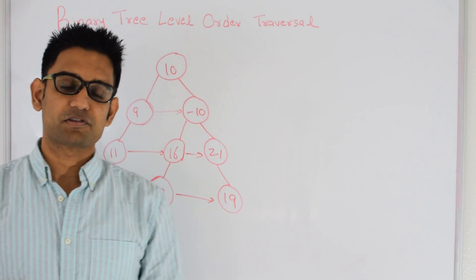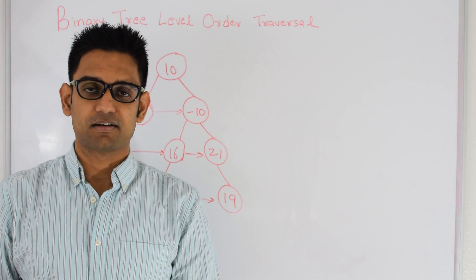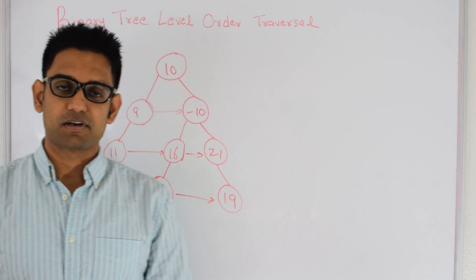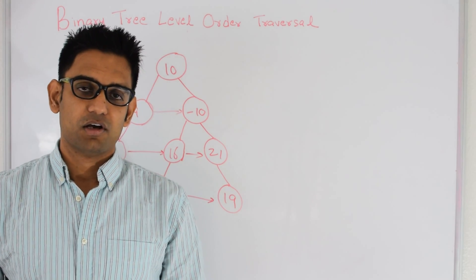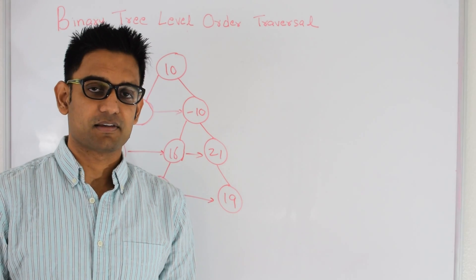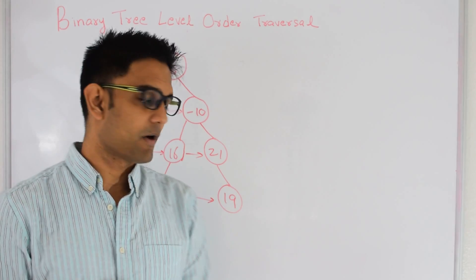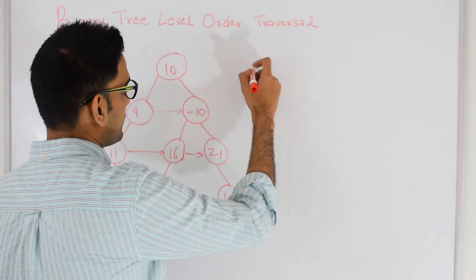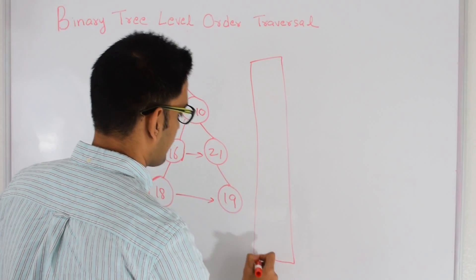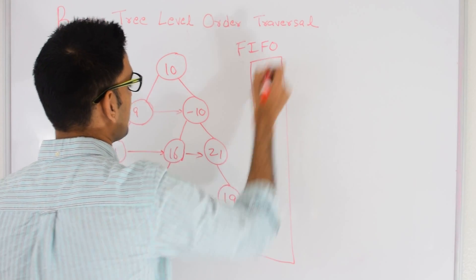For depth first traversal we use recursion, which kind of simulates a stack to solve the problem. Here we are going to use a different data structure which is a queue. A queue is a first-in first-out data structure, which means the element which goes in first is the first element to come out — FIFO, first in and first out.